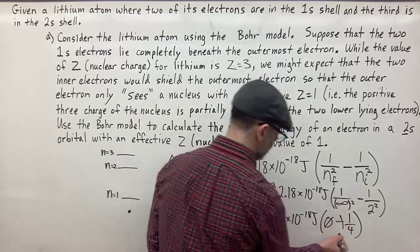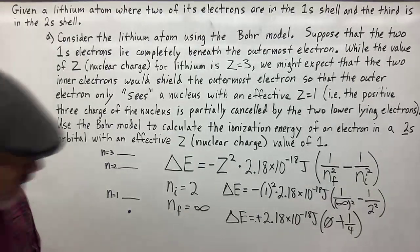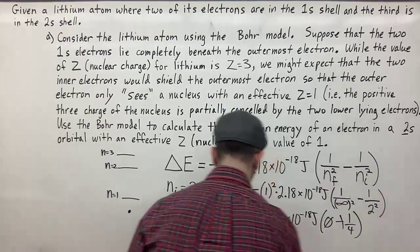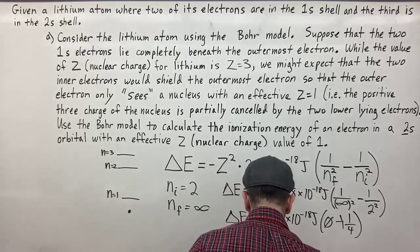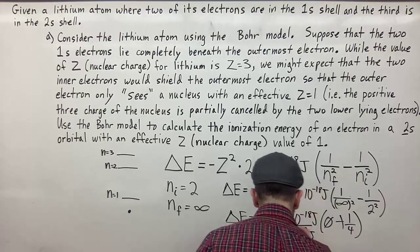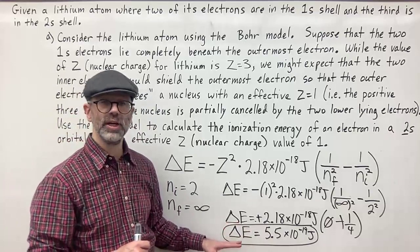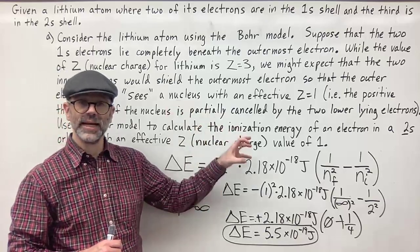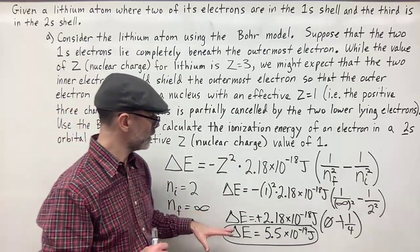So delta E, the ionization energy, equals 5.5 times 10 to the negative 19 joules per atom. That is the ionization energy if we're removing the electron from the lithium atom from the second energy level, removing it completely away from the nucleus — under the assumption of complete shielding.